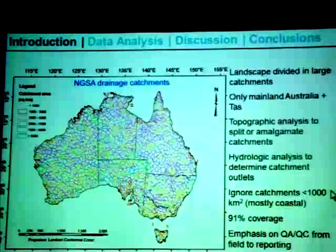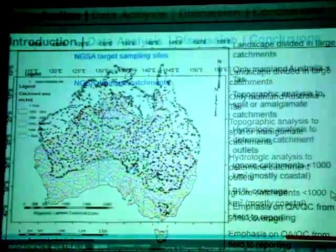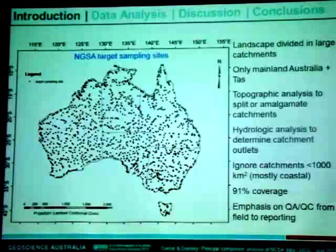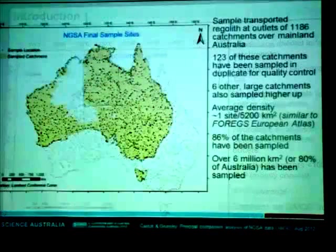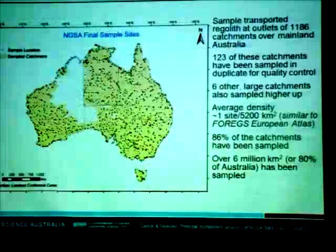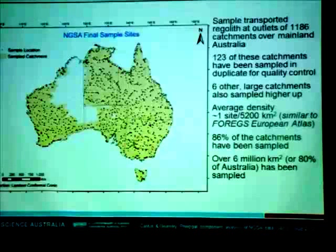This is what we actually ended up sampling — the catchments in yellow were the ones sampled. The total was about 1,200 catchments, and 123 of these were sampled in duplicates, a little more than 10% field duplicates for quality control. Six other large catchments were sampled a second time at a higher point rather than the outlet. This gave us a sampling density of about 1,500 square kilometers. We sampled 86% of our target catchments, representing 6.2 million square kilometers, or about 81% of the country.